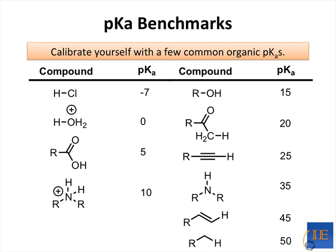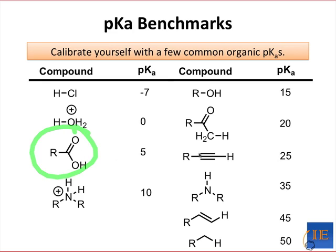Here are a few pKa's of common functional groups and compounds. Use a table like this to calibrate yourself on the relative acidity of common structures. As you do, try to rationalize why certain functional groups are more acidic than others. For instance, it makes perfect sense that carboxylic acids are much more acidic than ketones, because oxygen is more electronegative than carbon.